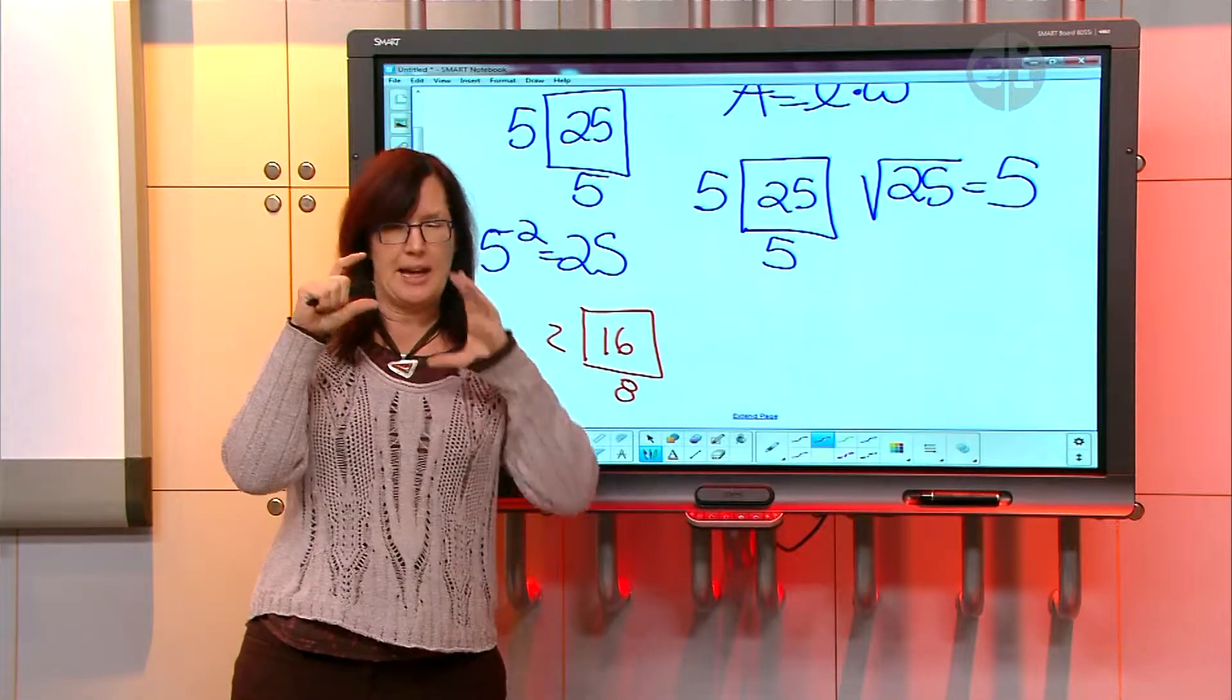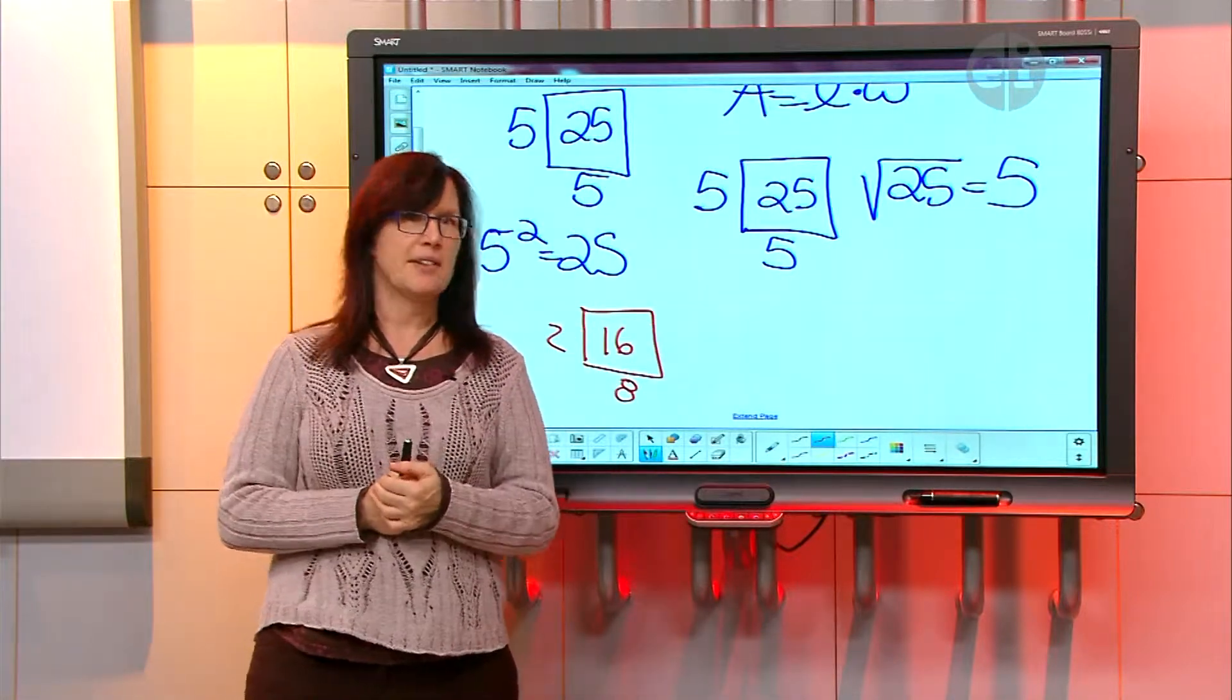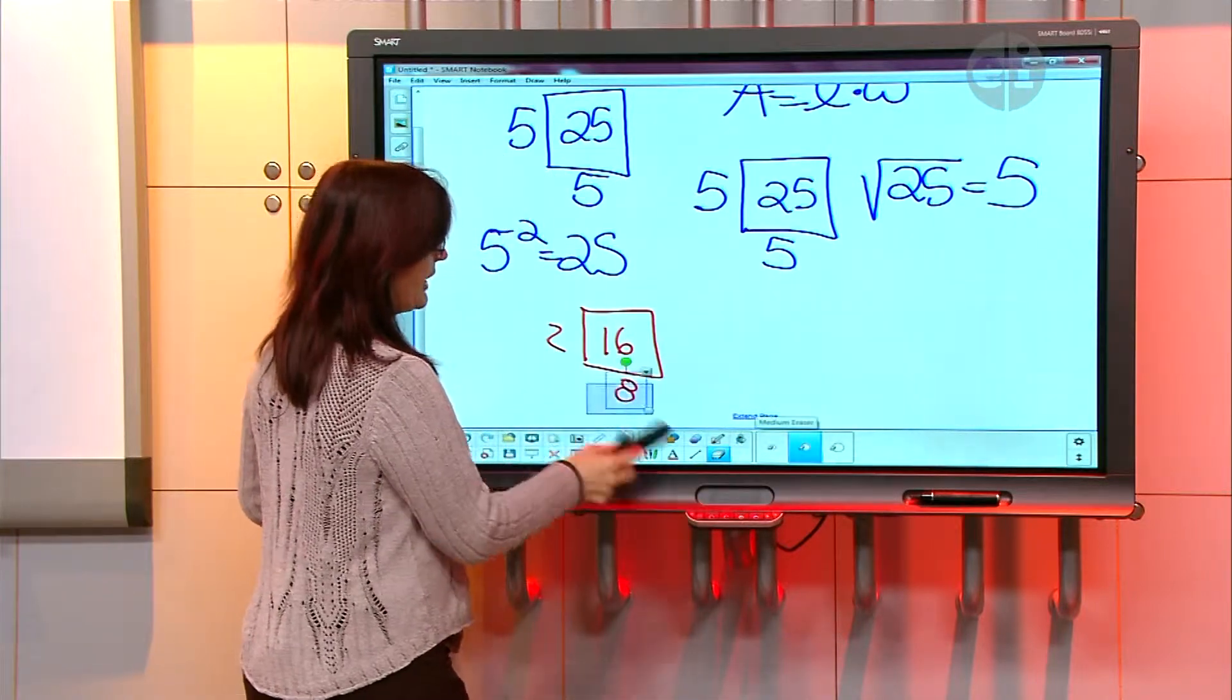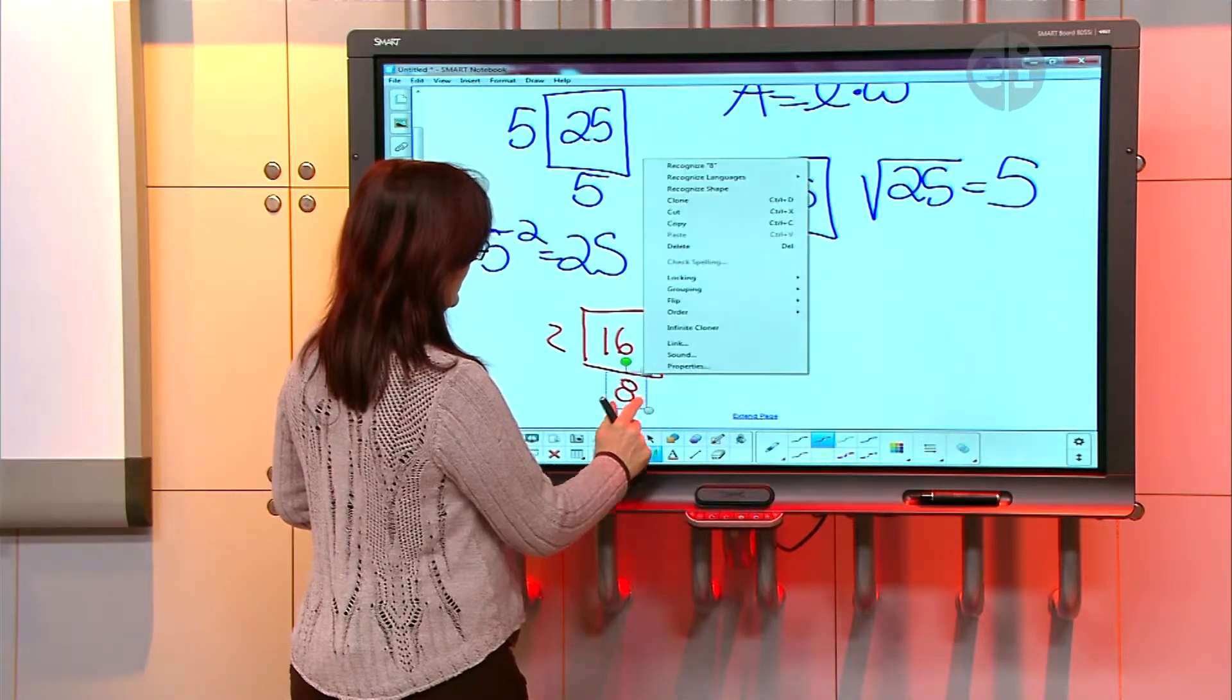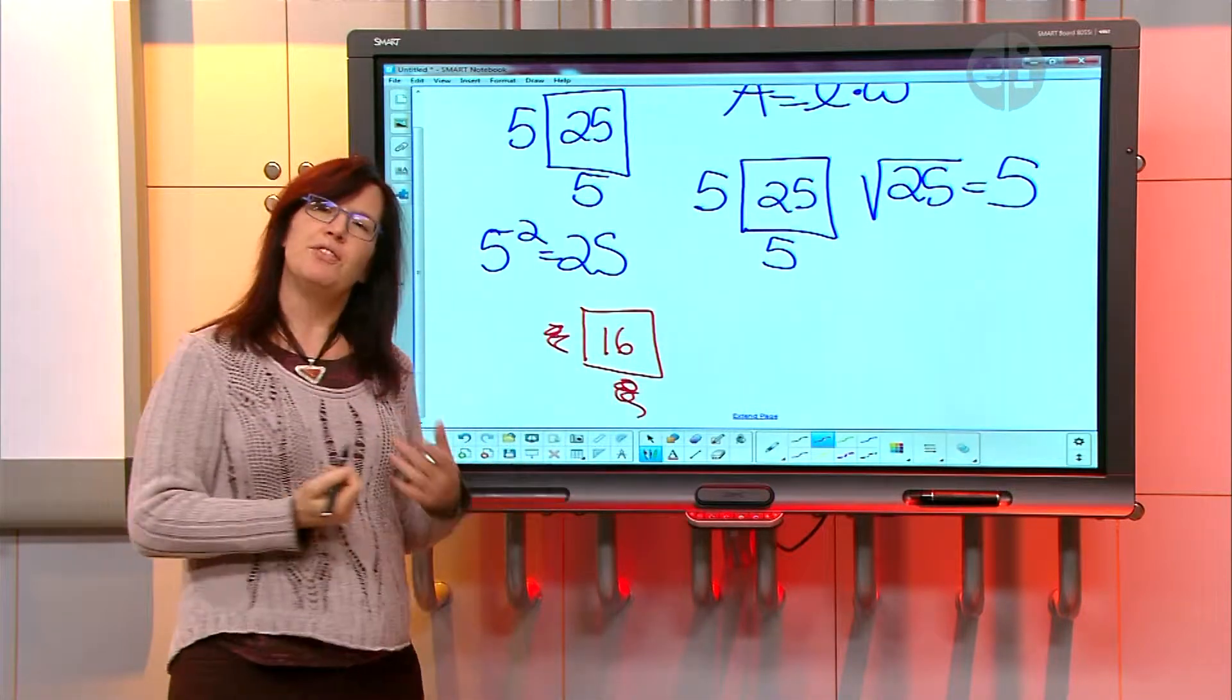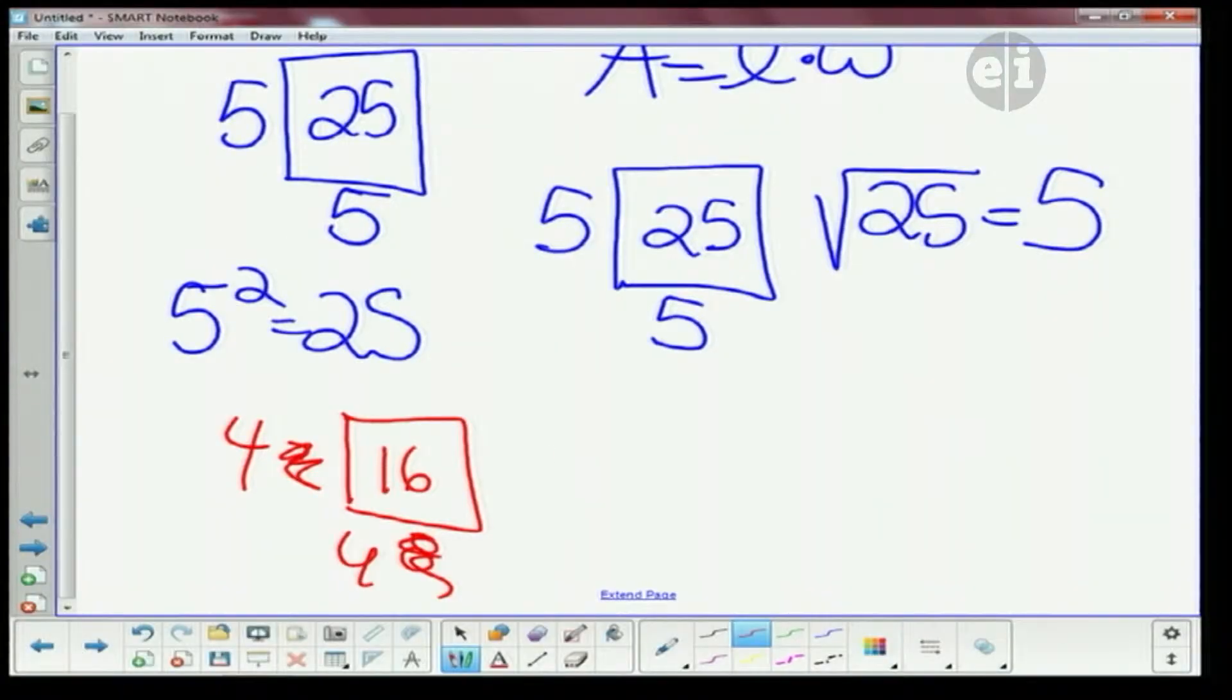But it wouldn't make a perfect square—that would make a rectangle. It'd be 2 high by 8 long, so it wouldn't make a square. When I look at this, I got to think of a pair of numbers that are gonna get me 16, and when I look at those numbers, I know that that number is gonna be 4, because 4 times 4 is 16. So the square root of 16 is equal to 4.